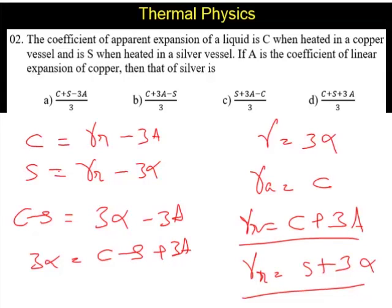What we are supposed to calculate? Alpha for the silver. So alpha is equal to C minus S plus 3A, entire thing divided by 3 is the answer.